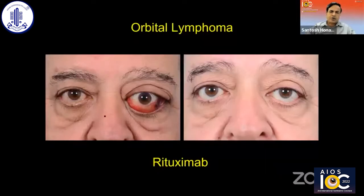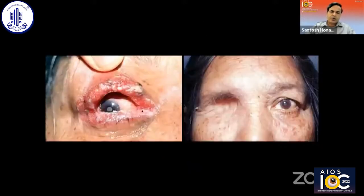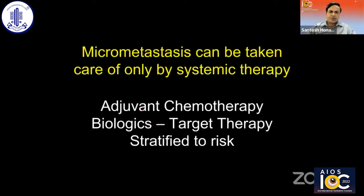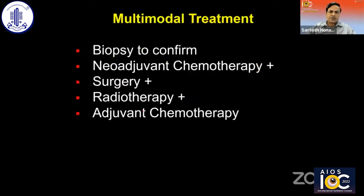In orbital lymphoma, not all patients need to be treated with external beam radiation. This patient had an anteriorly located lymphoma and was a professional who wanted minimal morbidity, so this patient could be safely treated with rituximab with minimal side effects and no ocular complications. Oculoplasty surgeons also tend to perform orbital exenteration more often than not, but we should understand that orbital exenteration alone without adjuvant therapy may have a high risk of mortality. So it's important to consider adjuvant chemotherapy, especially in patients who have a possibility of micrometastasis, which can come up several years later. Adjuvant chemotherapy, biologicals, or target therapy with risk stratification is warranted.